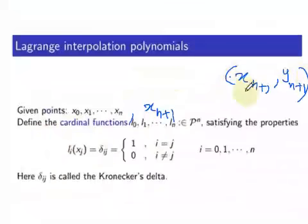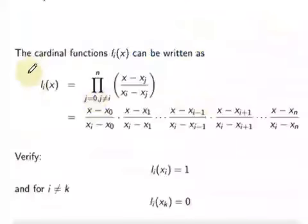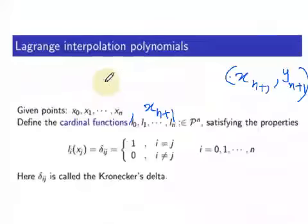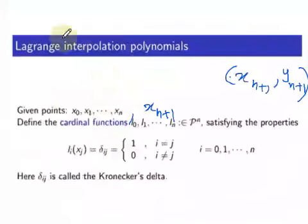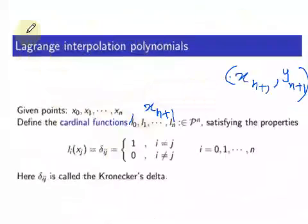And if, after your experiment, you want to add another data point to your data set, you have to recompute all the cardinal functions again — that's the negative part of the Lagrange polynomial. I hope you understood the pros and cons of Lagrange polynomials. In the next video, I'm going to discuss Newton's divided difference method.